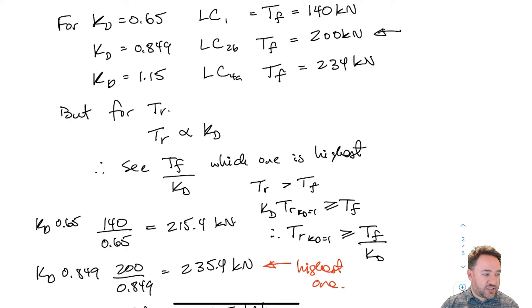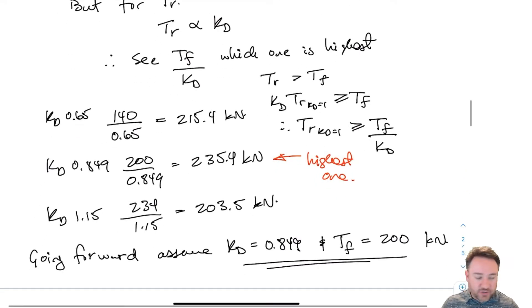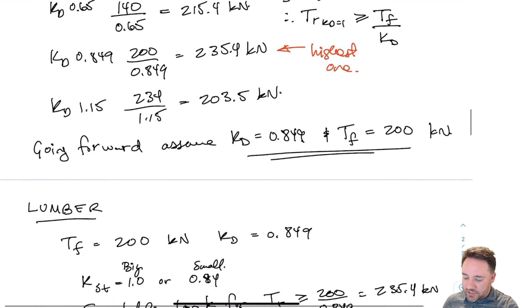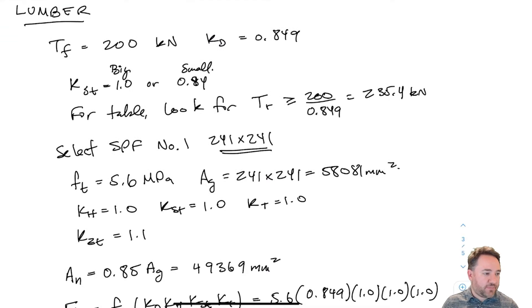So for tension we can actually just divide TF by KD to see which one governs. In this case we found that we had a KD that governed of 0.849 combined with the load case of TF equals 200. Basically these become our design criteria.